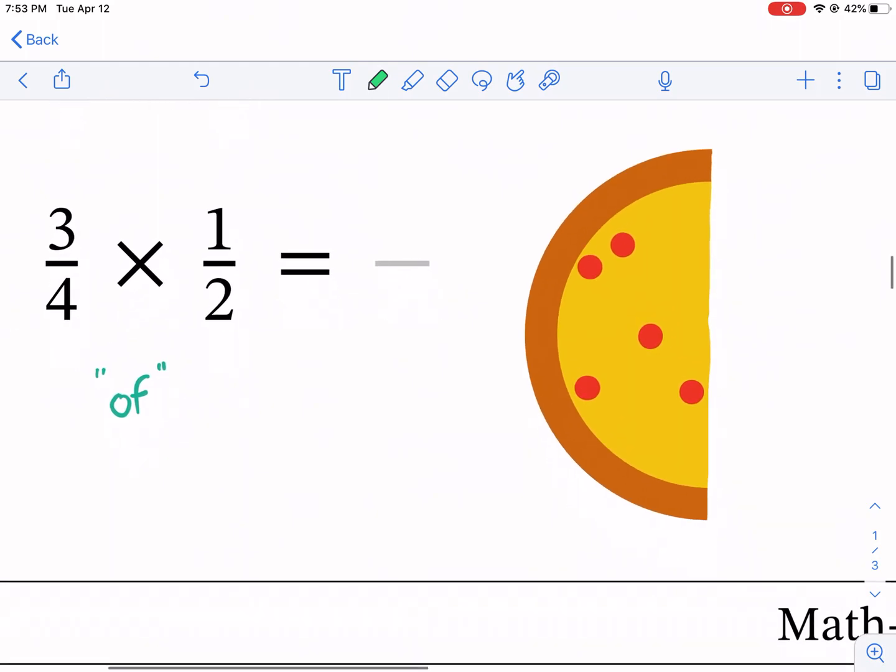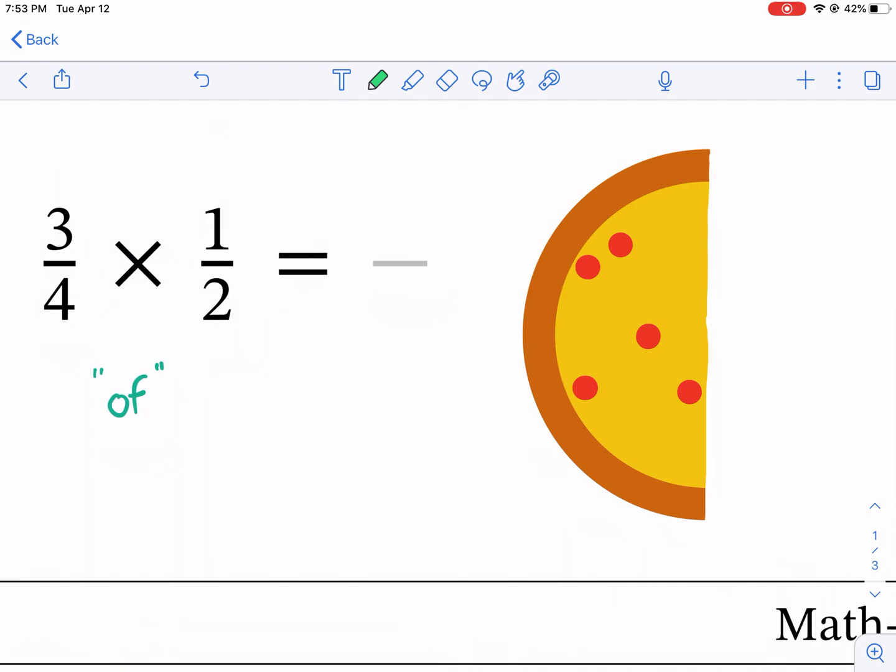So how do we find what 3/4 of 1/2 is? Well, here's our 1/2 and we would need three quarters or 75% of it. How would you do that? The easiest way to handle this situation is by first dividing this in half again. So that would be 1/2 of 1/2. That's no good.